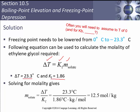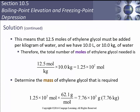Using ΔT = Kf × m: ΔT is 23.3°C, Kf is 1.86 °C·kg/mol. Solving for molality: m = 23.3 / 1.86 = 12.5 mol/kg. This means 12.5 moles of ethylene glycol must be added per kilogram of water. We have 10 liters, or 10 kg of water, so total moles needed = 12.5 × 10 = 125 moles. Multiplying by the molar mass gives approximately 7,760 grams, or 7.76 kg of ethylene glycol.